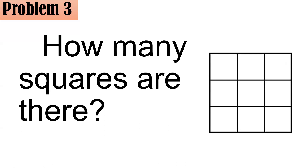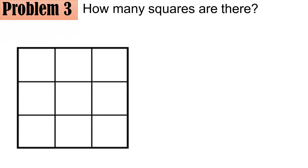Take note that in this figure there are squares of varying sizes. Let's now reveal the solution. One solution is to identify one-by-one squares, two-by-two squares, and three-by-three squares. Starting with the one-by-one squares: counting them gives one, two, three, four, five, six, seven, eight, nine — or three times three — nine possibilities. So there are nine one-by-one squares.